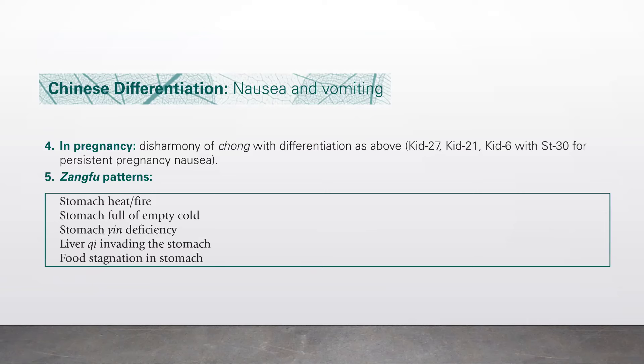Number four, in pregnancy: disharmony of chong with differentiation as above. Kidney 27, Kidney 21, Kidney 6 with Stomach 30 for persistent pregnancy nausea. Number five, hiccup patterns: stomach, heart fire; stomach full or empty cold; stomach yin deficiency; liver chi invading the stomach; food stagnation in stomach.